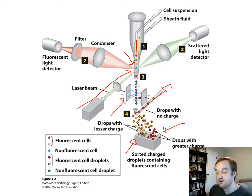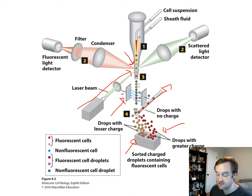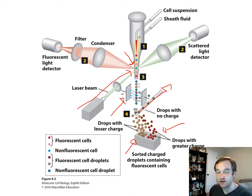From there, the sorted cells can either be cultured or used for genomics or transcriptomic studies, where we look at DNA or RNA expression.